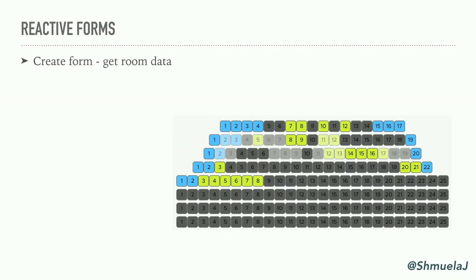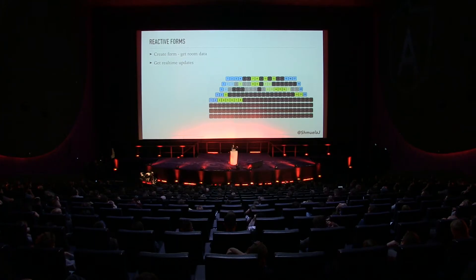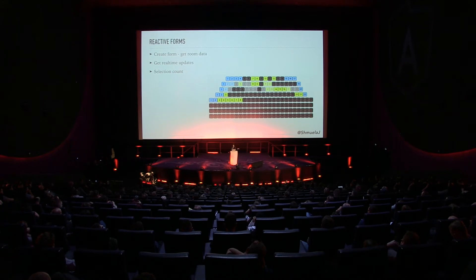I'm really taking it to the extreme here. What we'll see is: creating the form, getting data asynchronously from the server to create the form — the room configuration I need, how many seats there are, how many rows, what the seat types are. Getting real-time updates about the occupied seats. Selecting the count of selected seats is also an observable. Asynchronous validations, and reacting on errors — showing the display message and updating the seat to unselect and disable it. All of this I'm doing with observables.